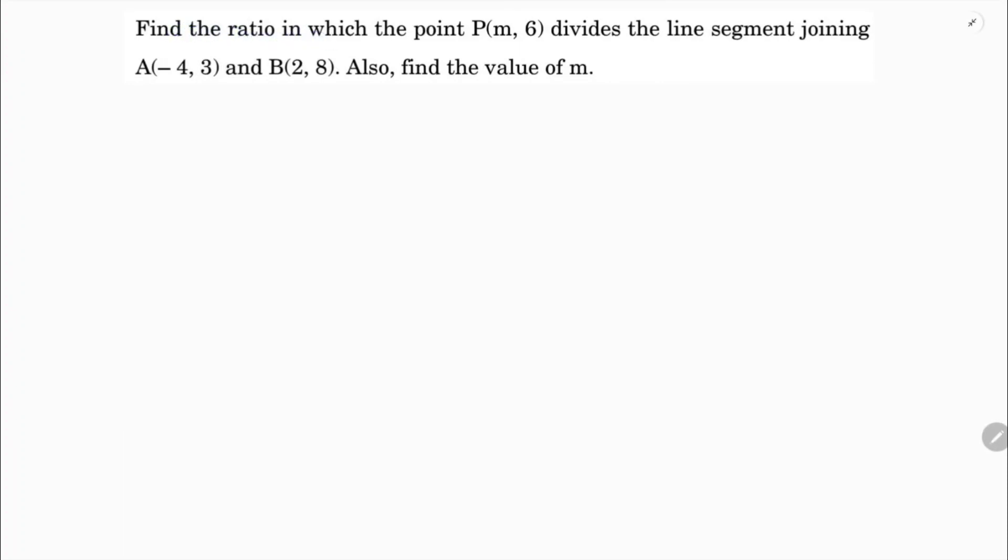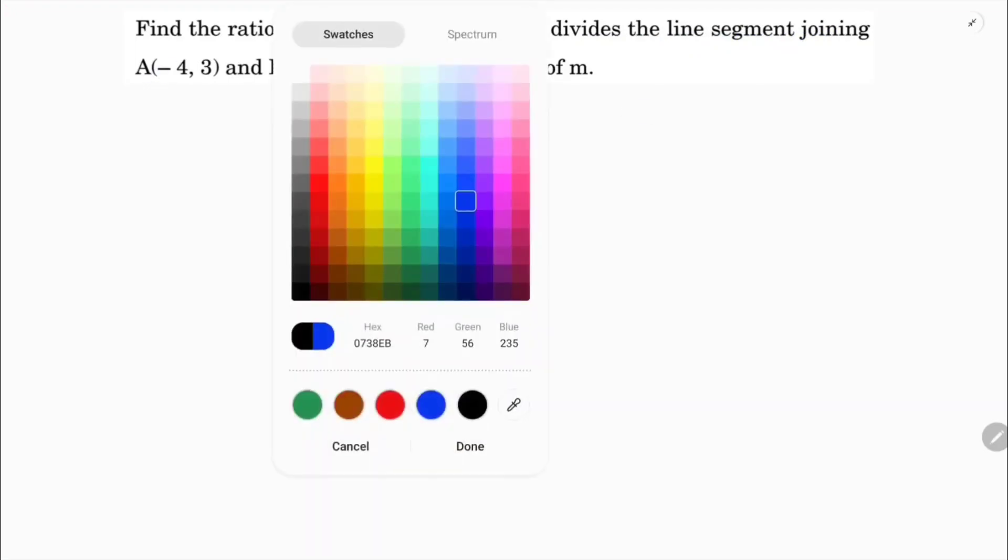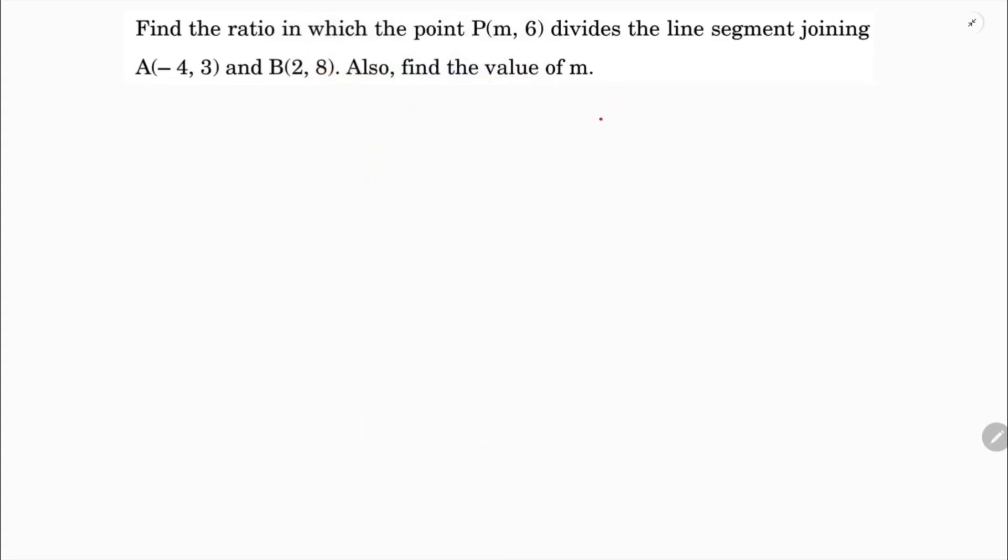Find the ratio in which the point P(m,6) divides the line segment joining A(-4,3) and B(2,8). See here, line segment joining A(-4,3) and B(2,8) is divided by the point (m,6).